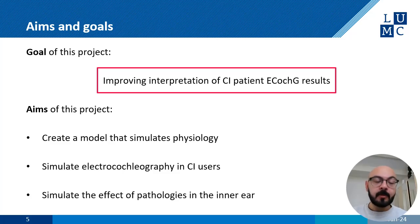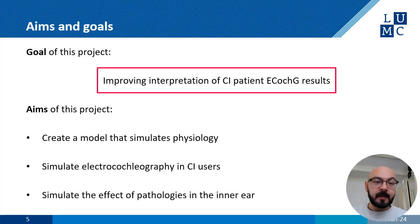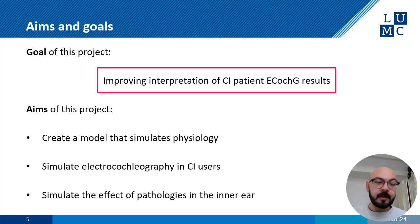Lastly, we want to simulate the effect of pathologies in the inner ear. We want to change the parameters of our model and study how they affect the different outputs. For example, we want to see how the endocochlear potential changes the outputs of the inner hair cells.